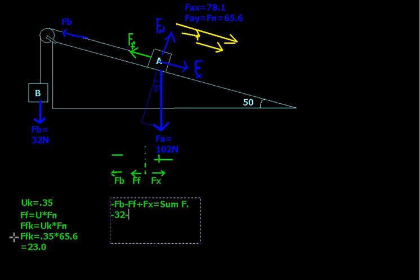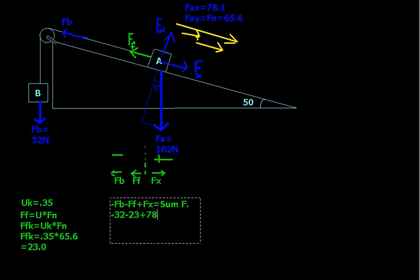And then minus the force of friction, which we just figured out. Force of friction is the coefficient times the normal force. We ended up getting 23.0 for that, so I'm just going to put 23 in. And then we add to it the force in the x direction — that's the amount that gravity is pulling it down the ramp — and that we figured out is 78.1.